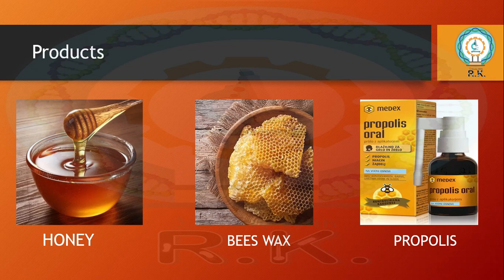Beeswax is also used in creams, lotions, and for building lipsticks. It is used in the formation of artificial honeycombs for apiculture purposes, especially in traditional technique for building artificial hives. The third product is propolis — a resinous mixture that honey bees produce by mixing their saliva and beeswax. Propolis is used for treatment of cough and throat irritation, and can be taken orally as syrup or drops.